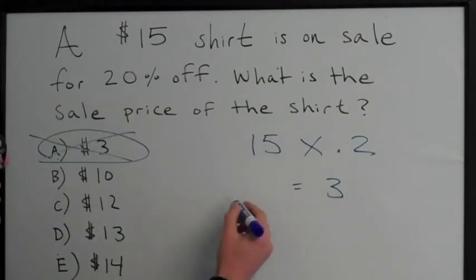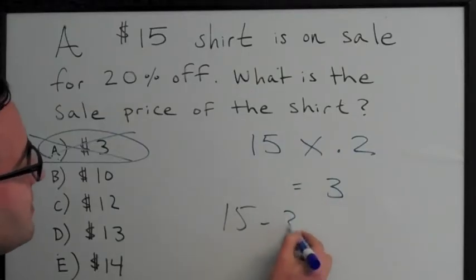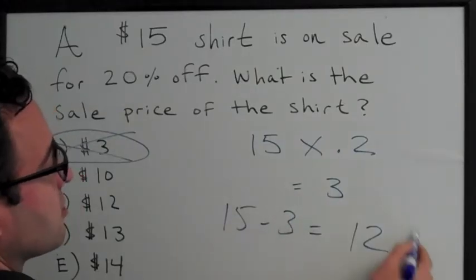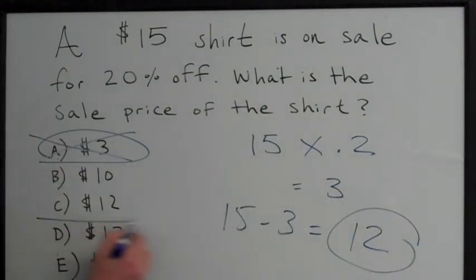You got the discount. Now you've got to subtract 3 from 15. The price of the shirt is $12. You go with choice C and you move on to the next question on the test. So just remember,